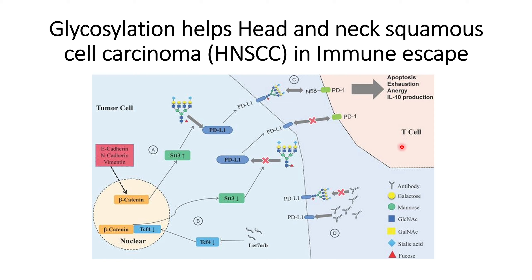This glycosylation-mediated immune suppression can be reduced by microRNAs from the LAT family. As shown in the figure, LAT7A and LAT7B microRNAs lead to downregulation or inhibition of TCF4. This TCF4 downregulation affects the beta-catenin/TCF4 complex formed within the nucleus, ultimately leading to downregulation of the STT3 enzyme.